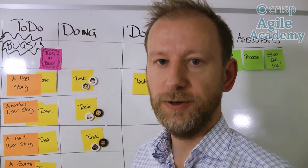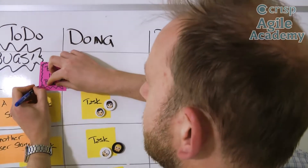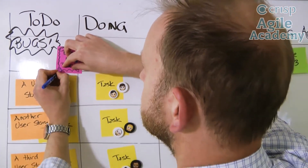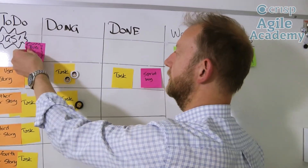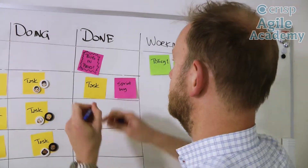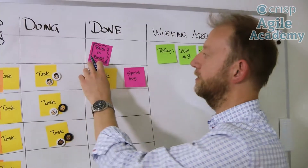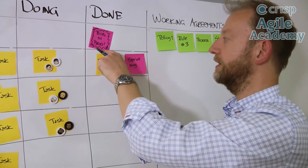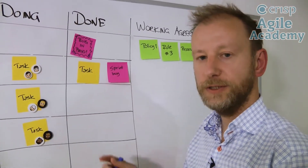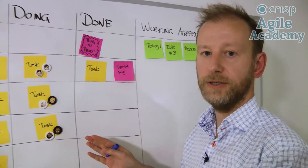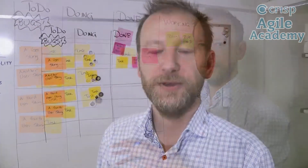A good practice is to note the date when the bug occurred — just write the start date when it came to your board. And then when it's done, note the end date. So if it started on the 15th and ended on the 16th, you have one day lead time. Measure this lead time on your bugs in production at least, because minimizing this lead time will save you a lot of money.